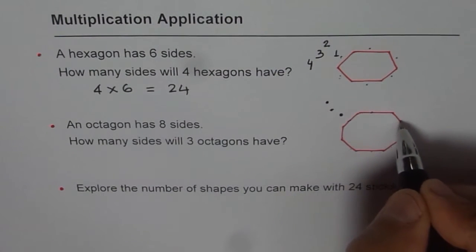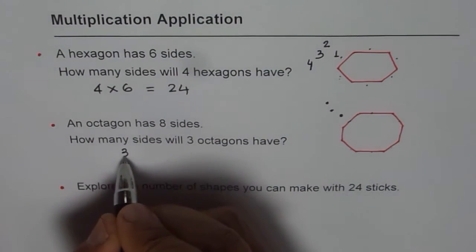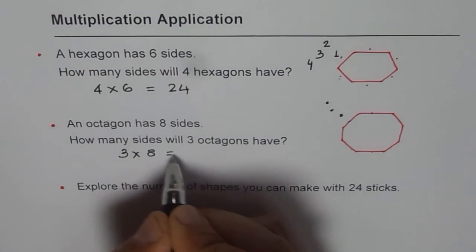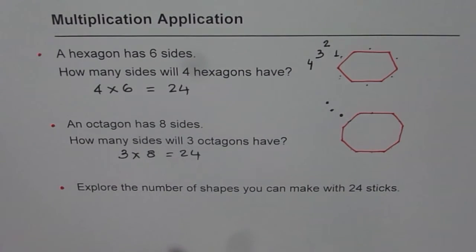Seventeen, eighteen, nineteen, twenty, twenty-one, twenty-two, twenty-three, twenty-four. So three times eight should be twenty-four. And the number of sides for the octagon is twenty-four.